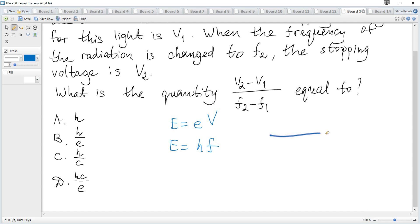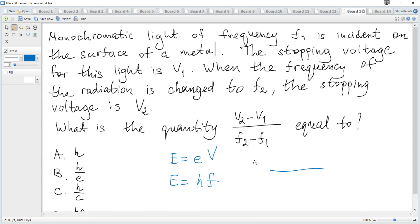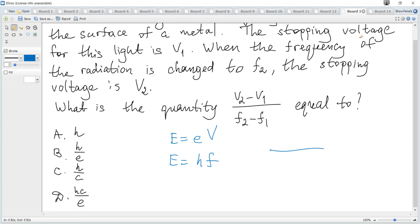Here you can see that change in potential, or voltage, is actually potential difference. So it becomes e over e and f, which is e over h. And the final answer is h over e. So it's option B.